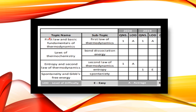For proof, in 2020 a question on the first law of thermodynamics was asked at average difficulty, and in 2019 another average-difficulty question on the same topic appeared. A question on entropy and the second law of thermodynamics was asked in 2020 at average difficulty, and another entropy question was asked in 2019.